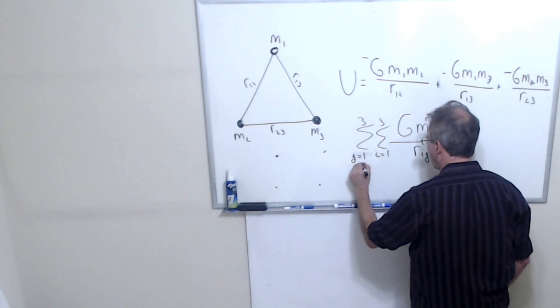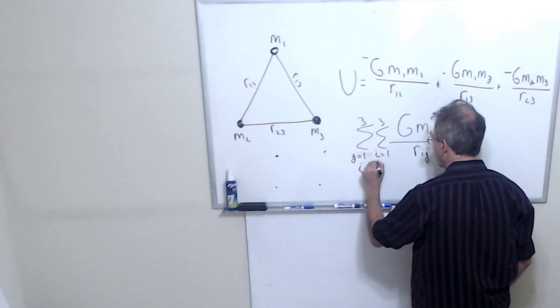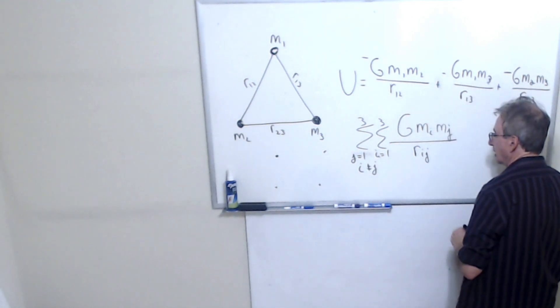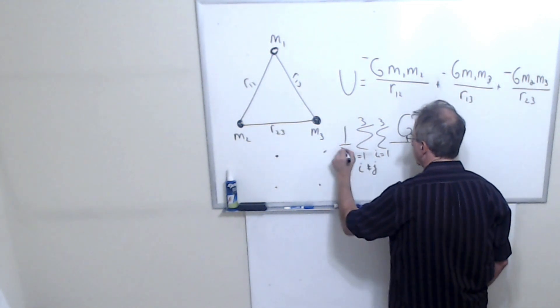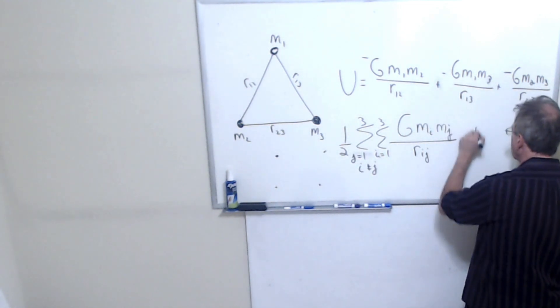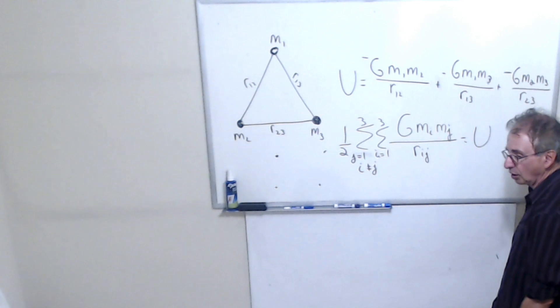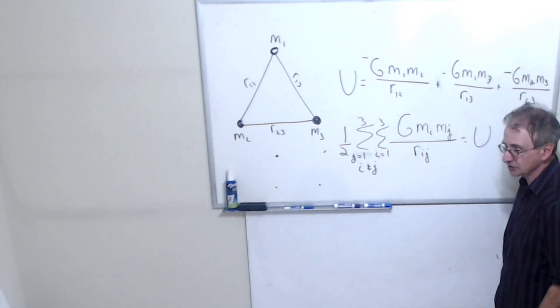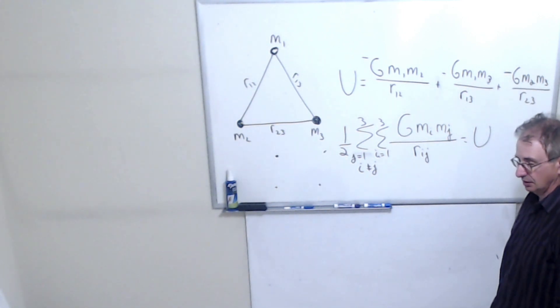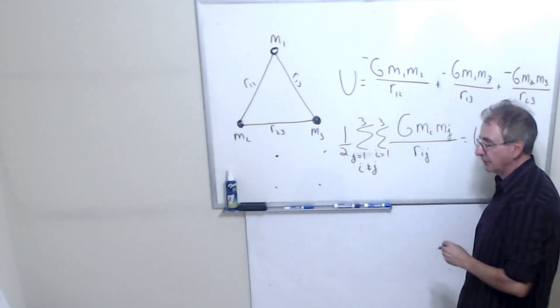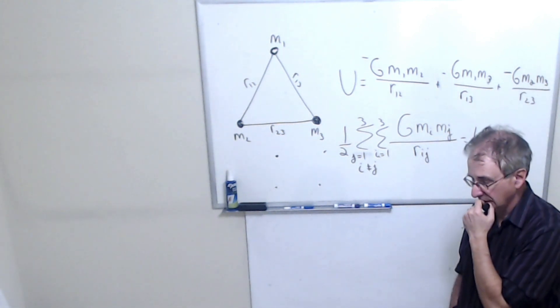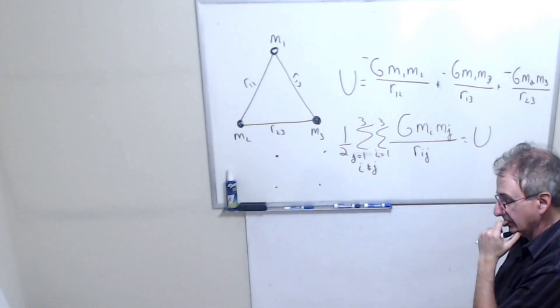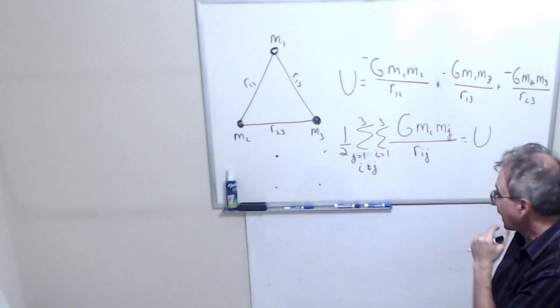But I cannot have I equal J because that doesn't make sense. And then I got to multiply this whole thing by a half. You would do this on a computer and you were going to code it. You would have to actually code in this equation. And I have to throw in a one half in there.